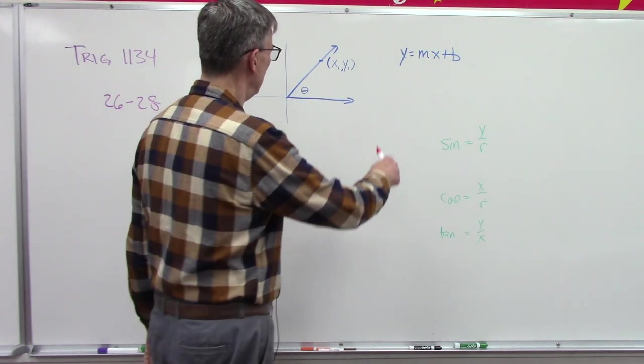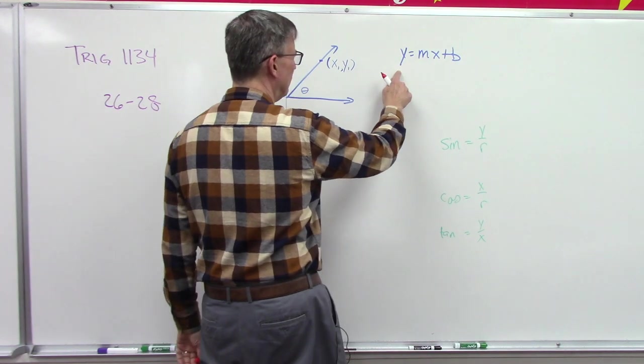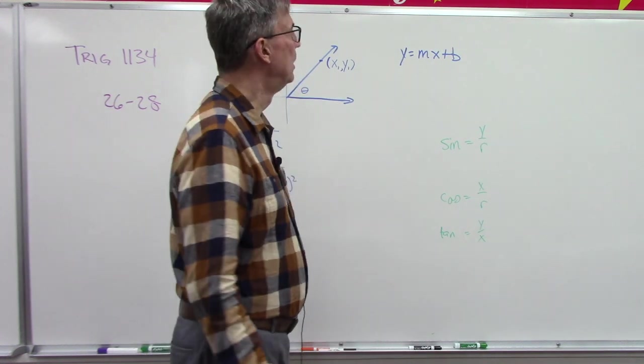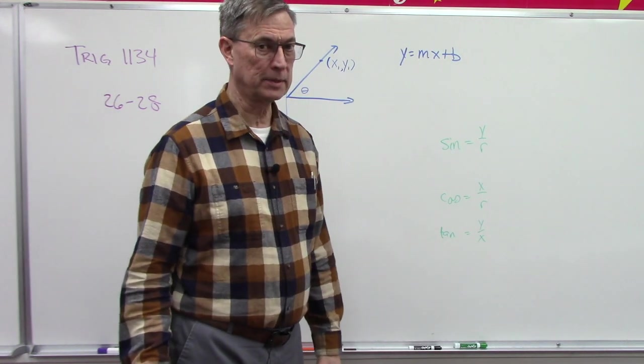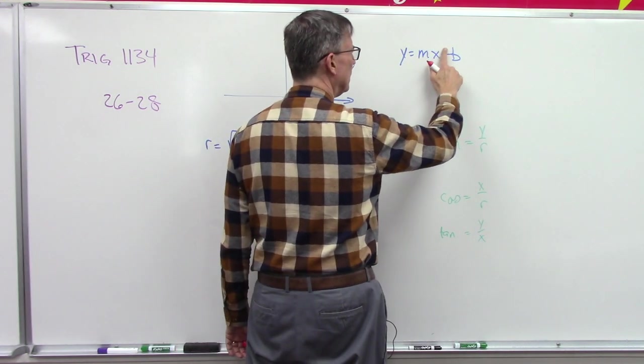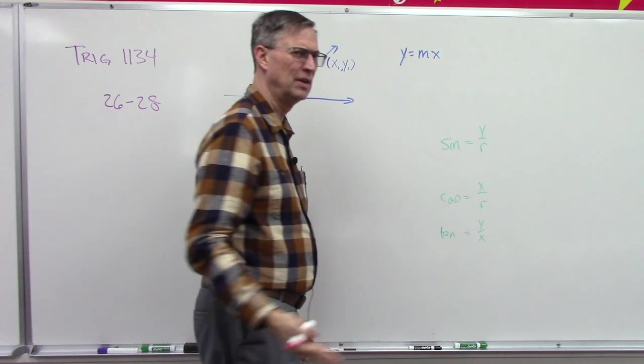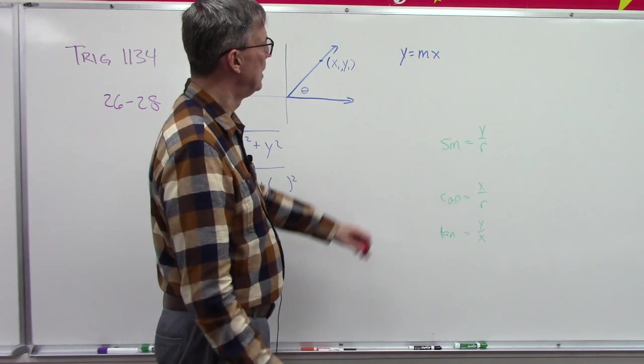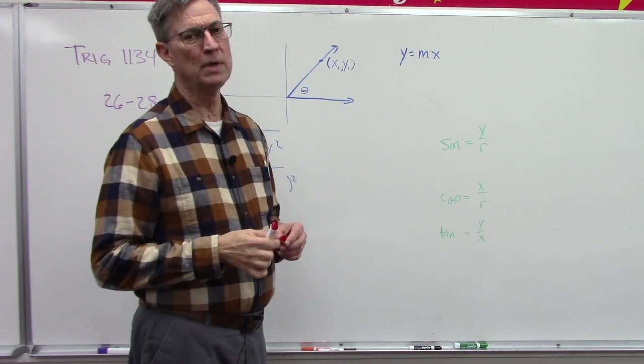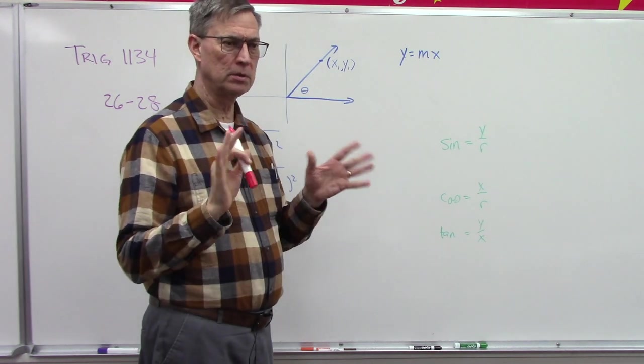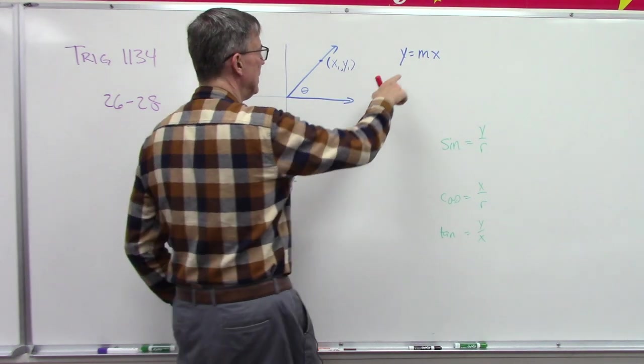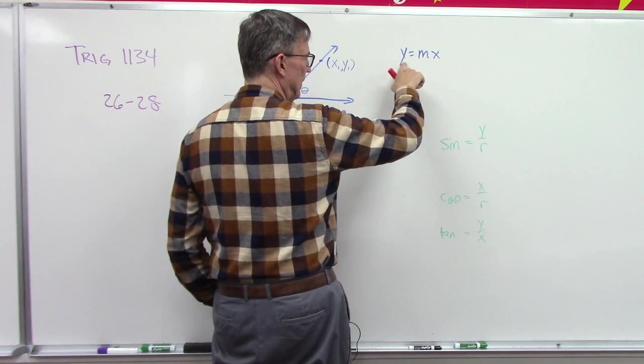I want you to notice this formula says y, the value of y, equals some fraction or number times the value of x plus in this case, because it goes through the origin, we're going to get rid of that because it's plus zero, so we don't even need that. M is the slope. Now we're not really going to figure out what the slope is at this point, so don't get too confused about that. Just remember m is the slope and we can find the value of y if we know a value for x.